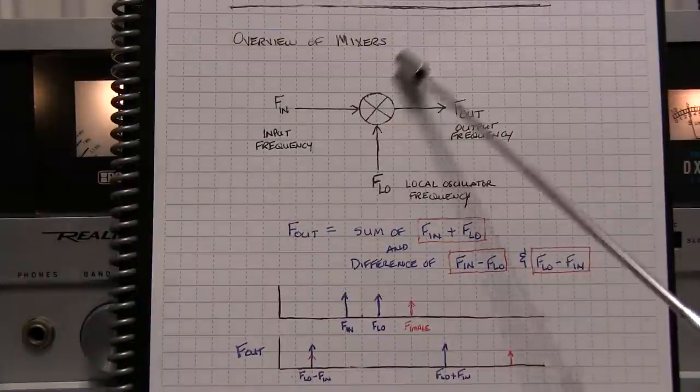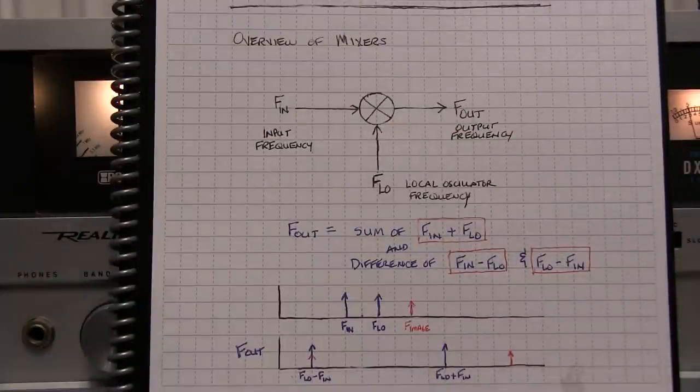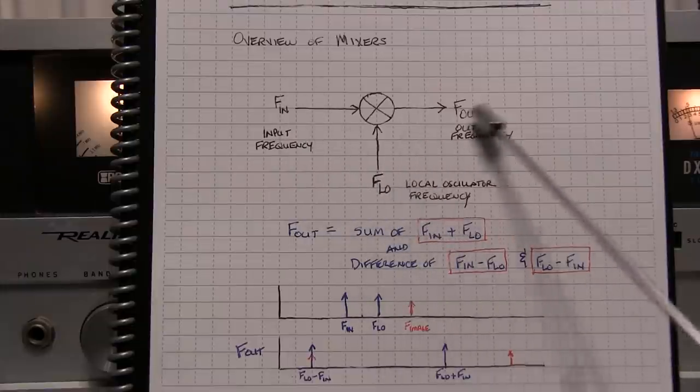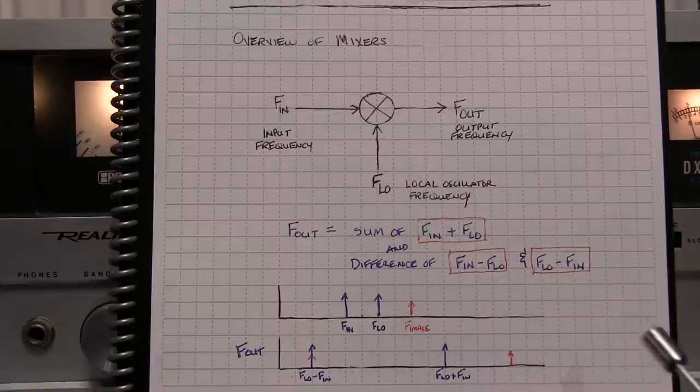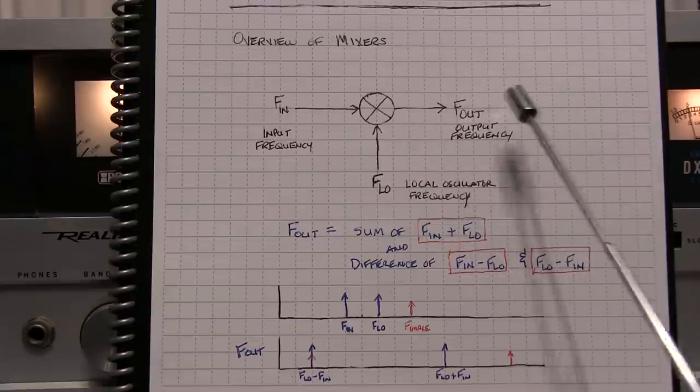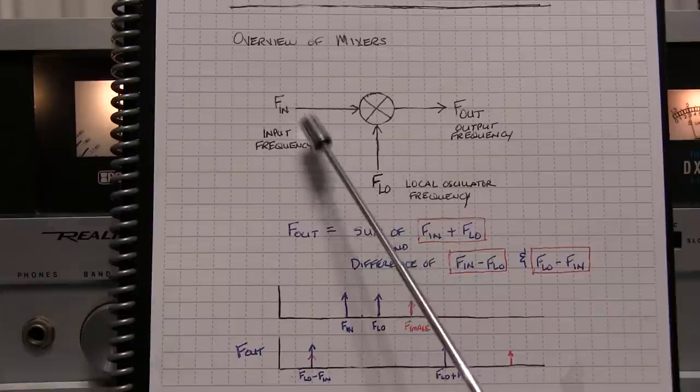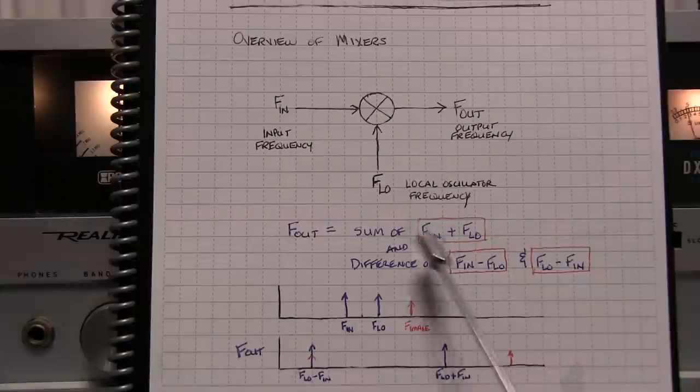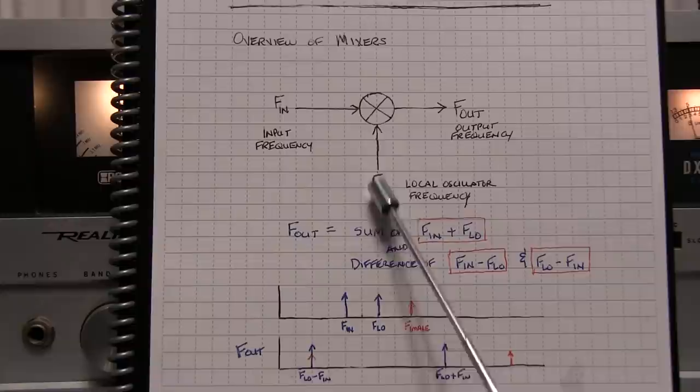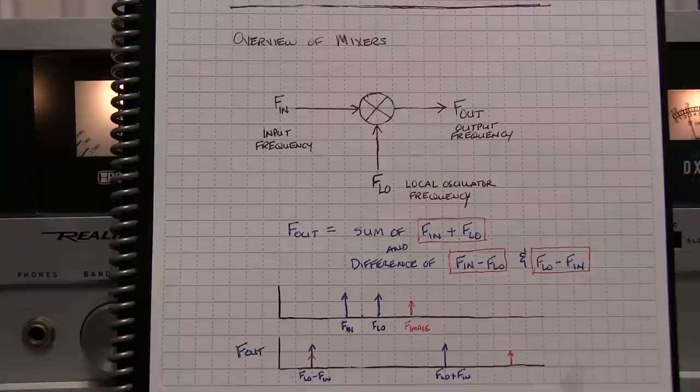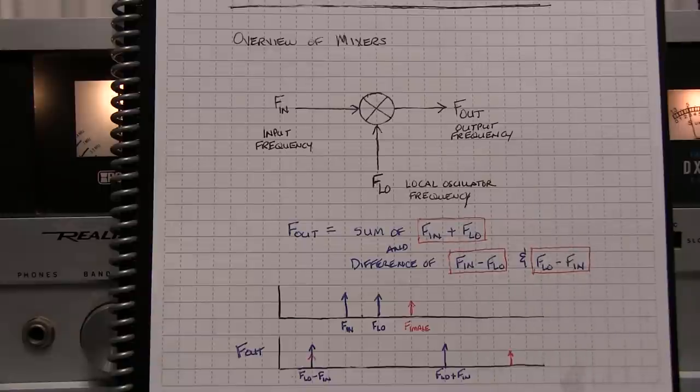Now I've talked about mixers in previous videos, and I'll link one or two of those down below. So we'll just do a quick review here. A mixer is a device that can take two input signals and then produce an output that's related to those two inputs. The output will consist of a number of different frequency components, one of which is the sum of the input frequency and the local oscillator frequency, as well as the difference products, FIN minus FLO, or FLO minus FIN, depending on which frequency is higher. And the reality is you can also get harmonics and things like that as well, but we're just going to concern ourselves with those particular components.